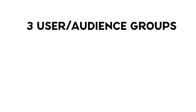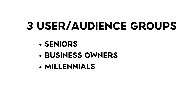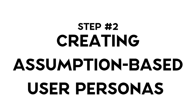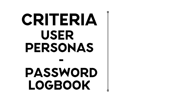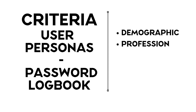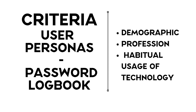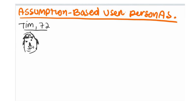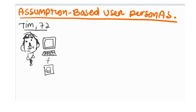Based on the information I gathered, I can think of three different users I could potentially make password logbooks for: seniors, business owners, and millennials. Step number two: creating assumption-based user personas. The user personas I decided to make are based on the following criteria, which I think are contextually relevant to password logbooks: demographic, profession, and their habitual usage of technology. My first assumption-based user persona, who is the archetype for seniors, is Tim. Tim is a 72-year-old recently retired man who owns a desktop computer and an Android phone.